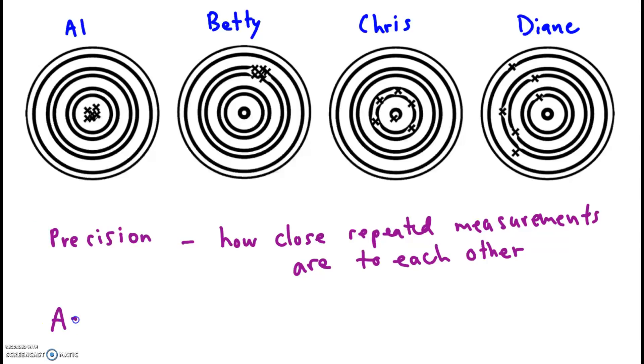And accuracy is a different concept altogether. The two are not related at all. Accuracy is how close measurements are to the target value, which is like the true value, the actual, the true, real number that you're trying to measure. How close did you get to the actual correct value?